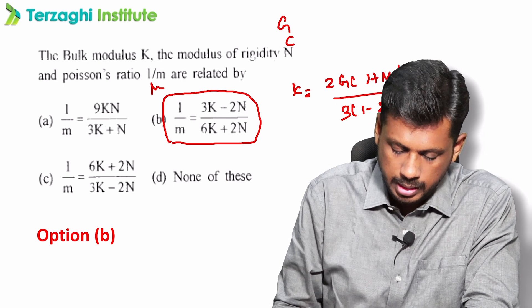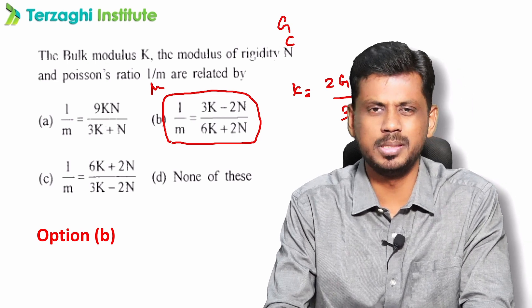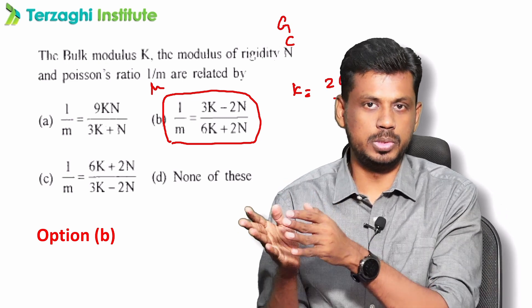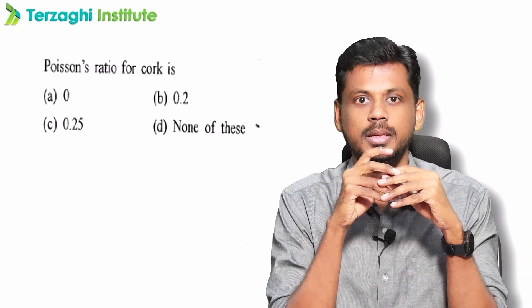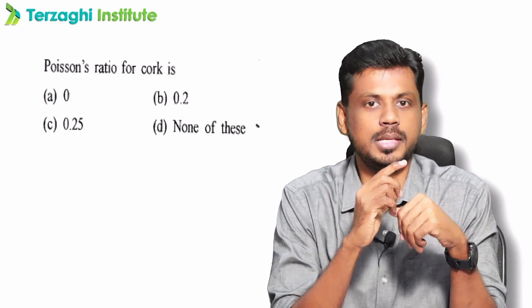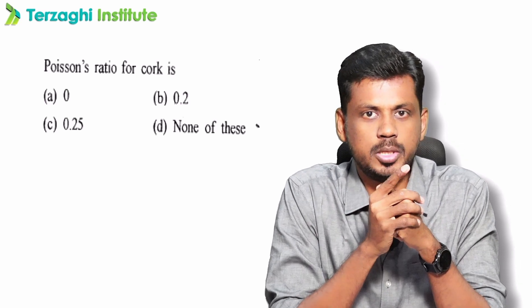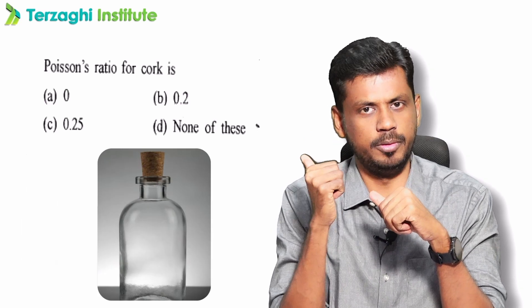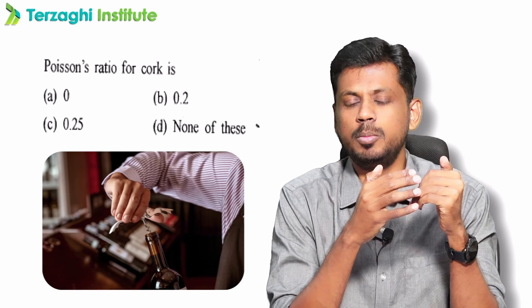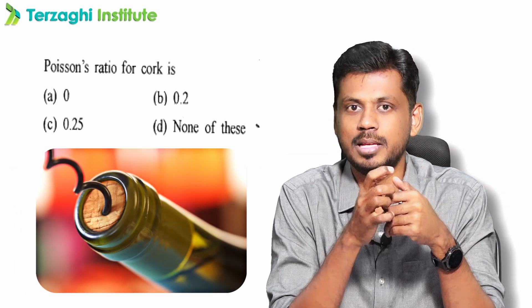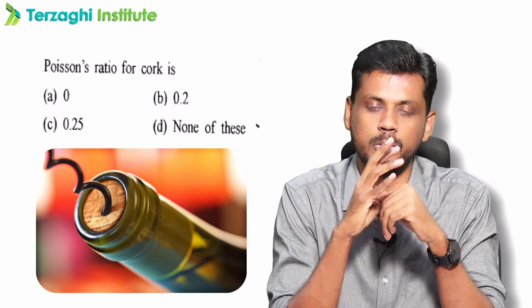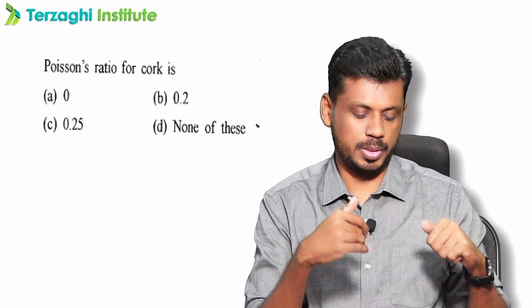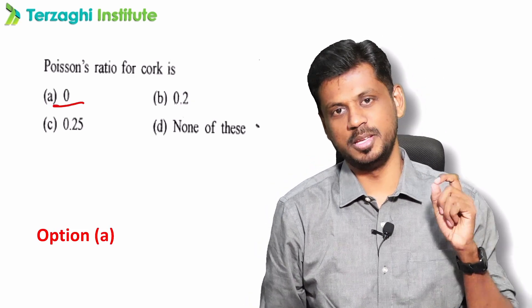The relationship for Poisson's ratio in terms of K and G is: mu equals (3K minus 2G) divided by (6K plus 2G). It is simple to remember: 3 and 2 in numerator, 6 and 2 in denominator. Poisson's ratio range is 0 to 0.5. If Poisson's ratio is 0, the material is like cork — used in wine or champagne bottles — meaning there is no lateral expansion.